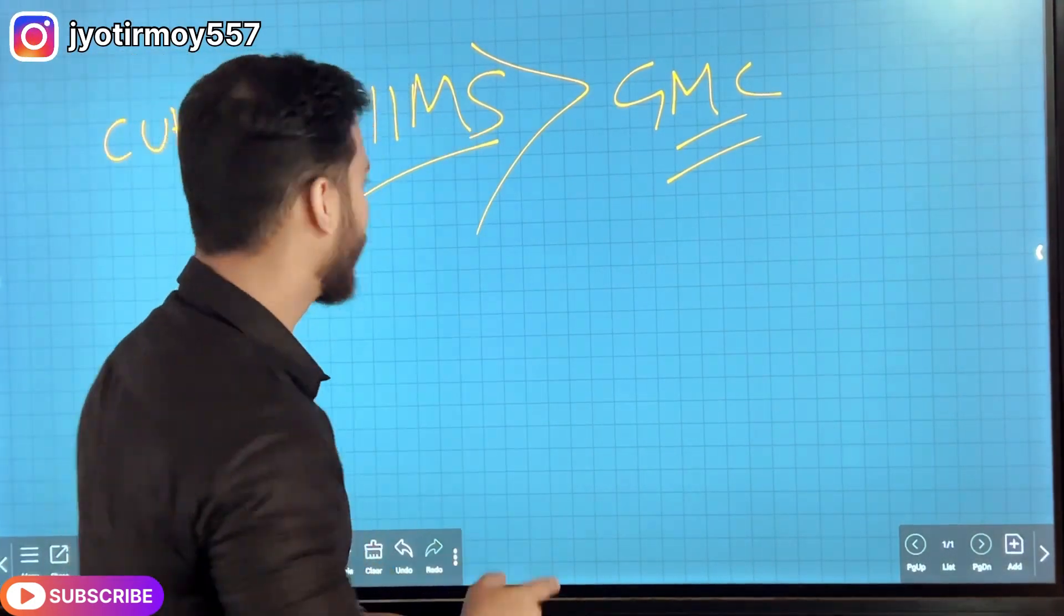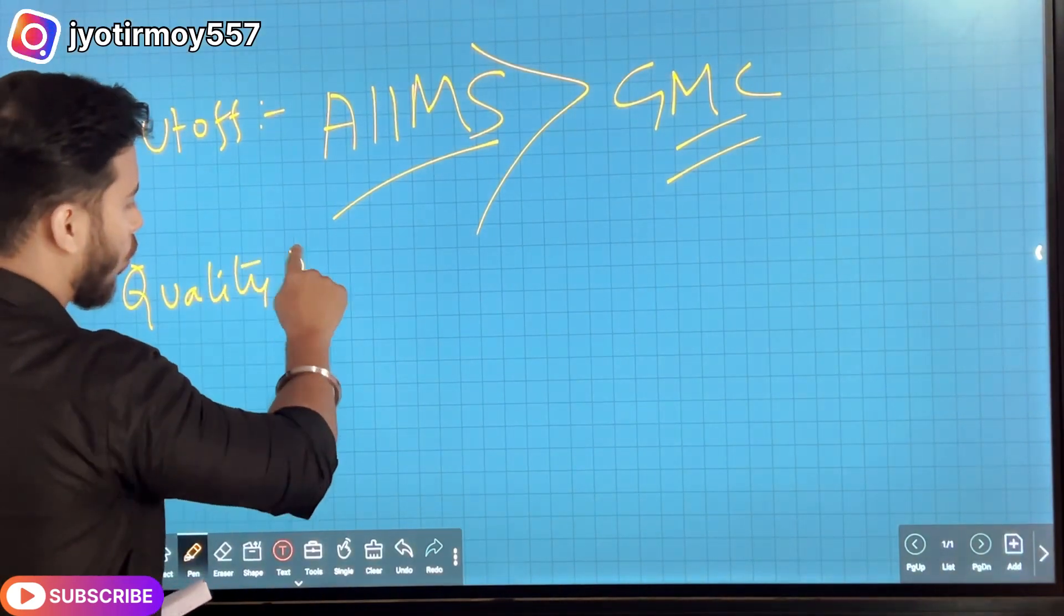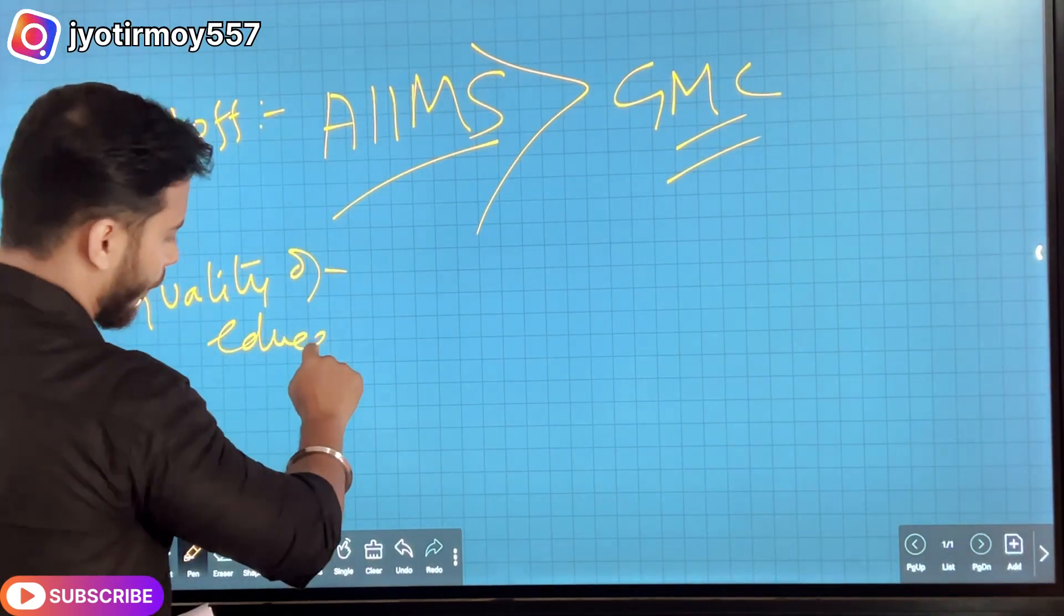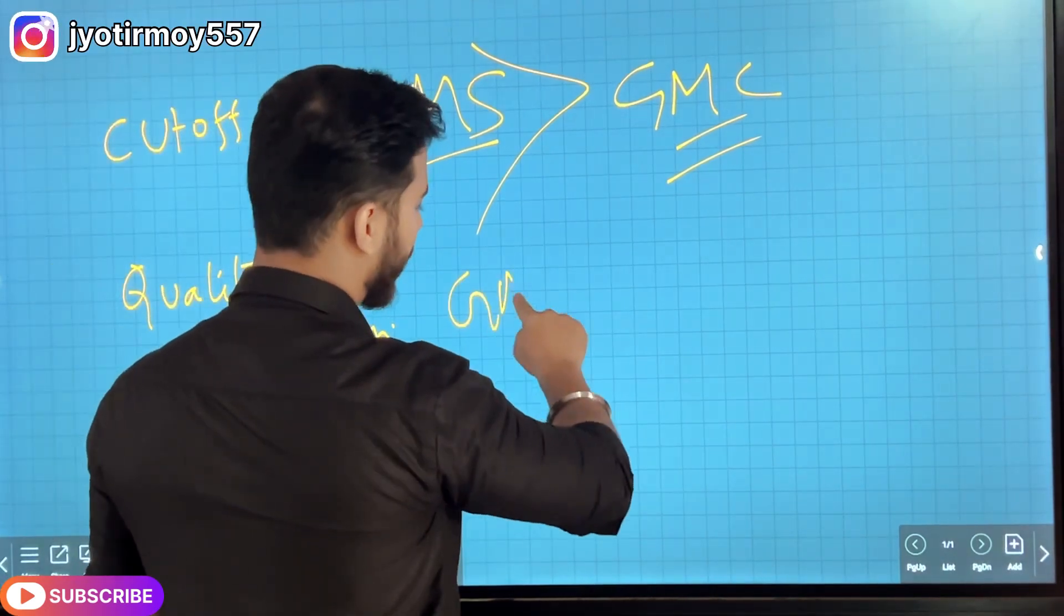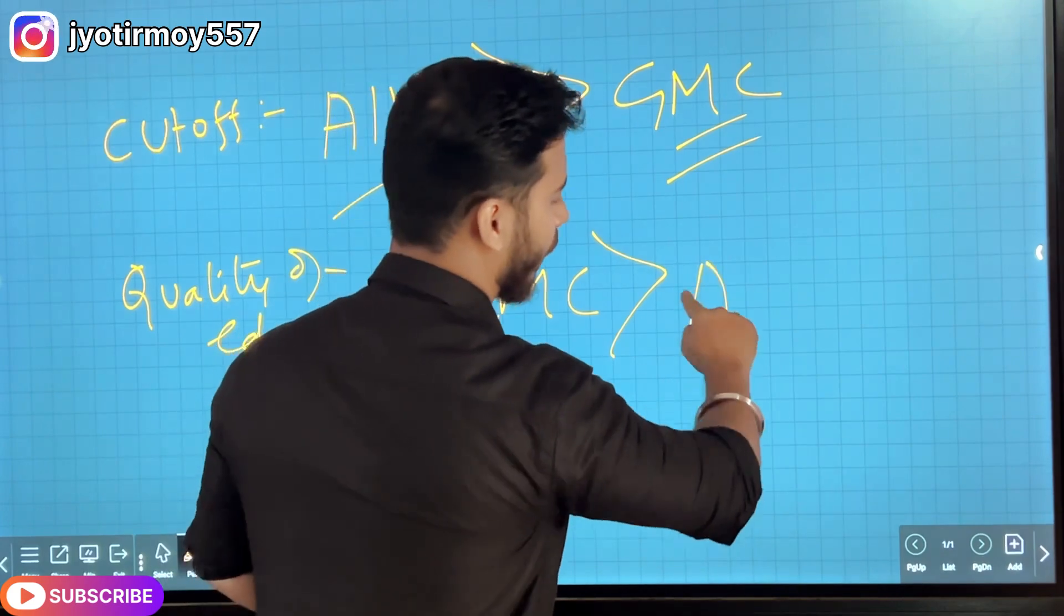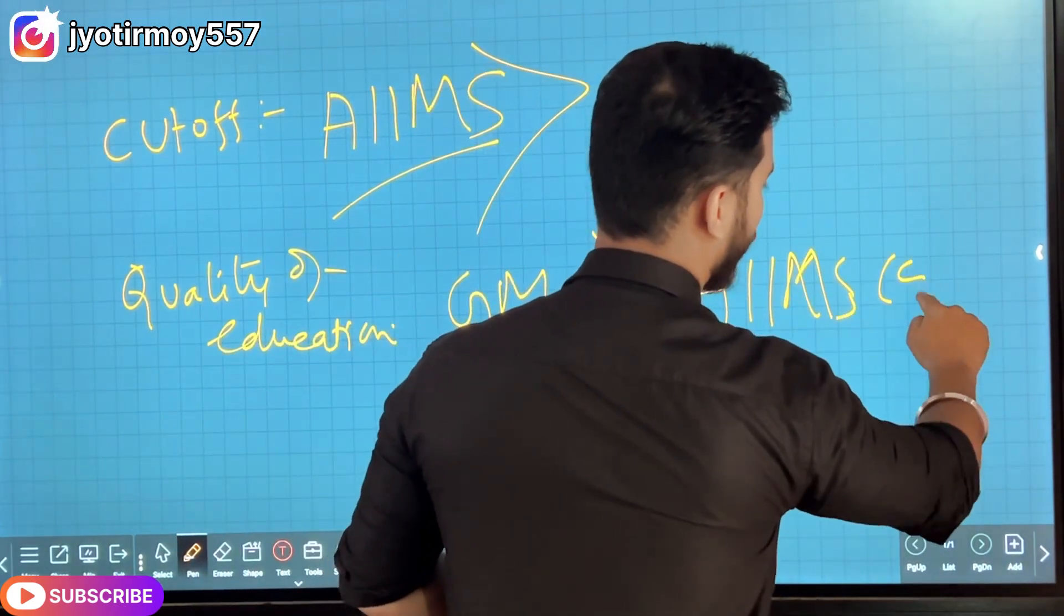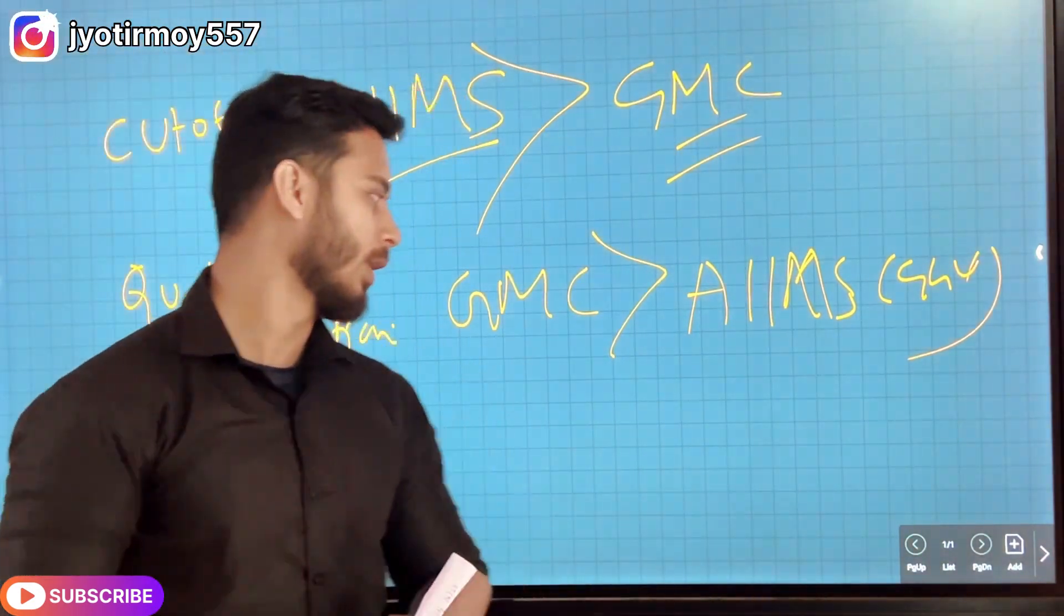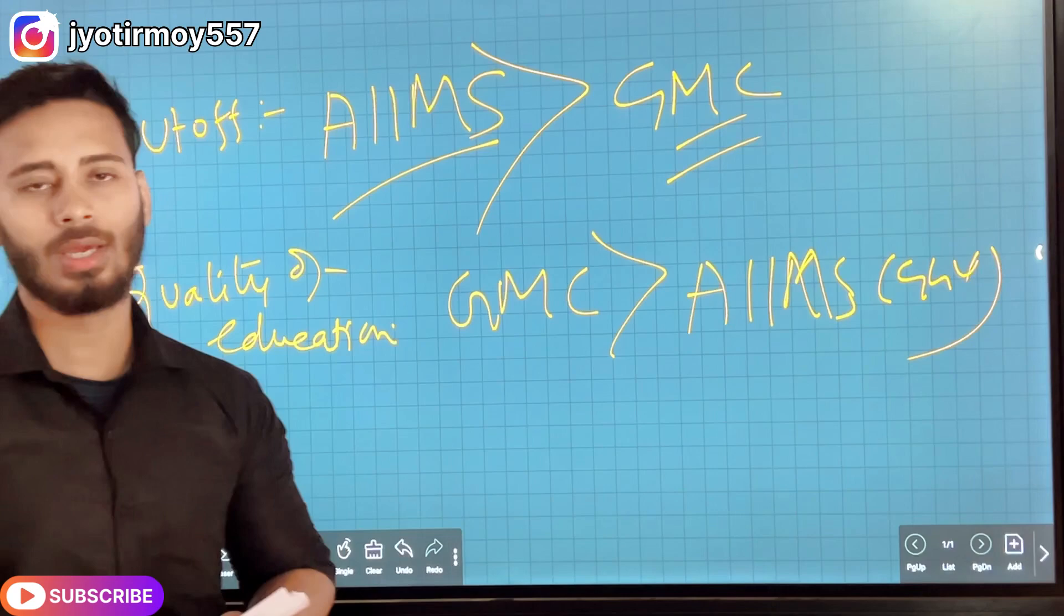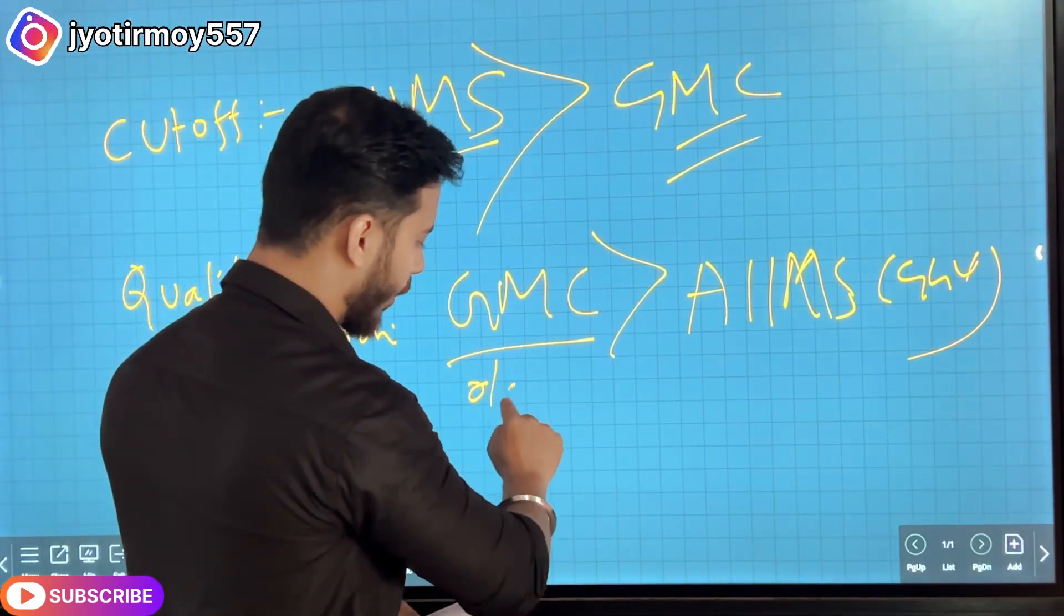But quality of education is better at GMC. GMC quality in terms of education is better. AIIMS cutoff is higher, but GMC will be used for new students.